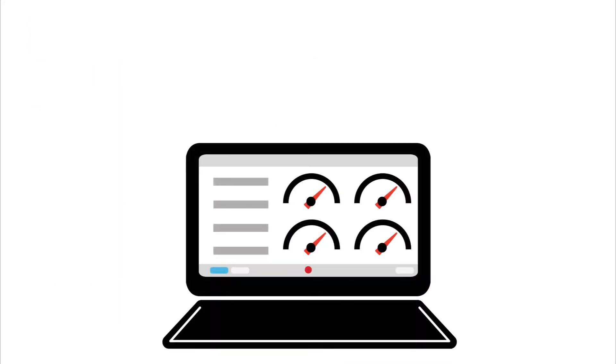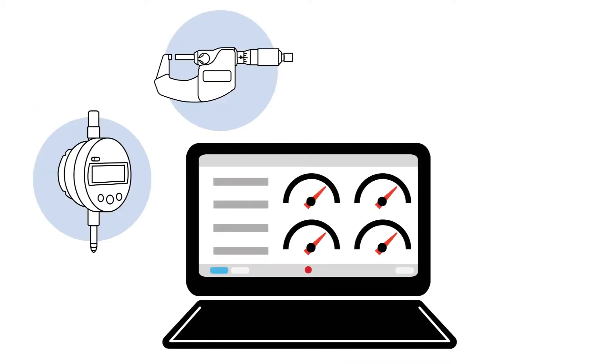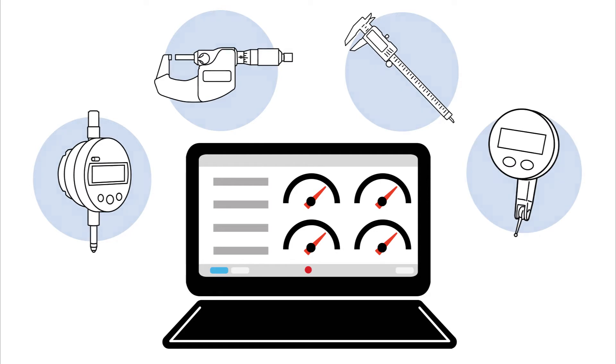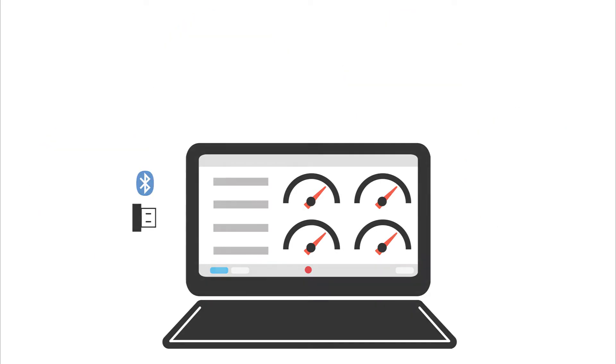Multigauge allows you to wirelessly connect to, view, and record multiple gauges simultaneously. A universal USB BLE dongle allows you to use Multigauge on different models of Windows machines.